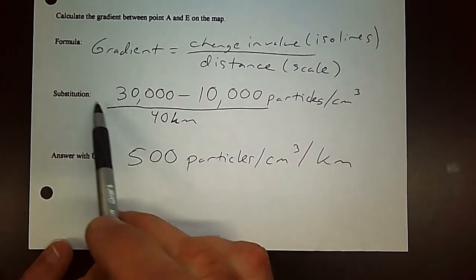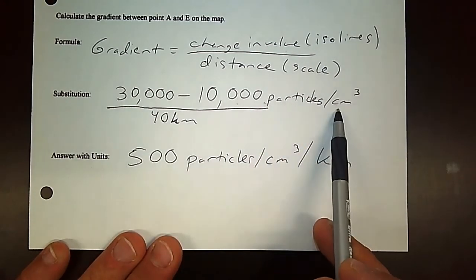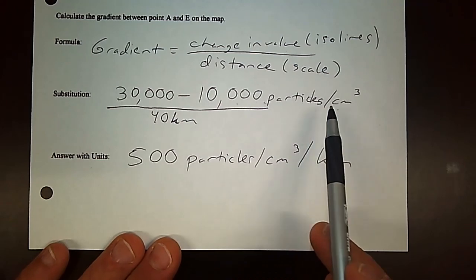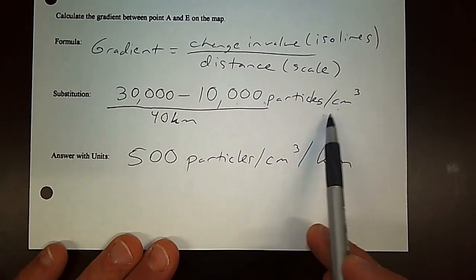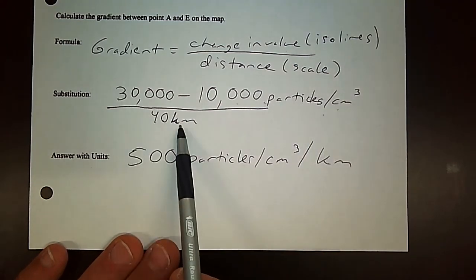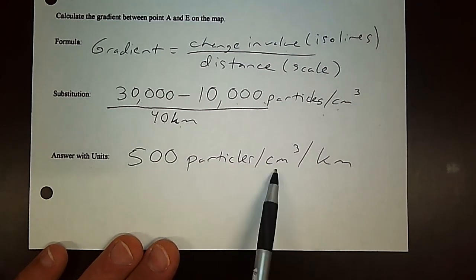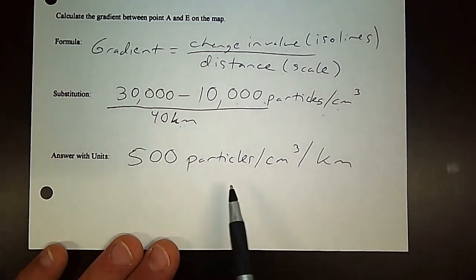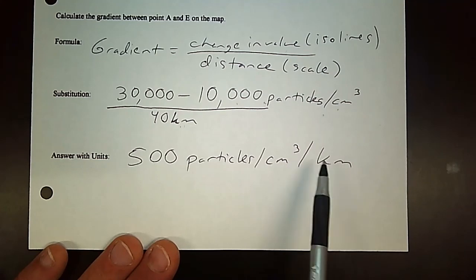So again, put your units into the substitution, next to it. So I put it right here. Particles per centimeter cubed. And then kilometers for your distance. And the final units will be this over this. So particles per centimeters cubed per kilometer.